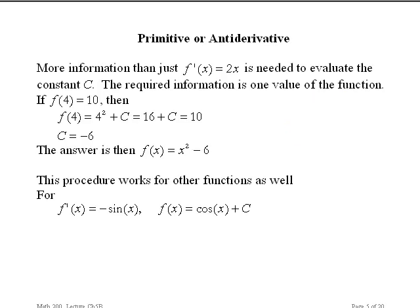So how can I find the value of that constant? I need more information — specifically, one value of the function. Say I know that at x equals 4 the function is 10. I substitute into the primitive: 4 squared plus c equals 10, and solve for c. Now I have the primitive for that particular situation. To single out one member of the family, you need the derivative and one function value.